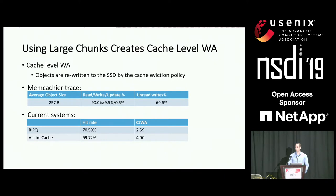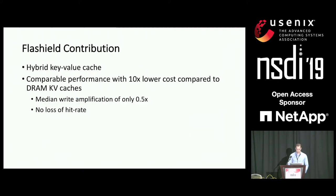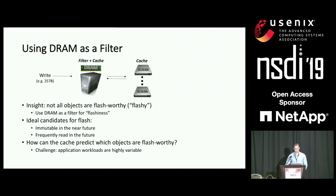That led us to design Flash Shield, a cache that uses both DRAM and Flash. Our goal is to have comparable performance to DRAM caches but with more than 10 times lower cost, achieved by minimizing write amplification. One of the key insights is that not all objects in the cache are Flash-worthy — or what we call 'flashy.' So instead of writing all objects to Flash, we always write them first to DRAM and they must prove their flashiness before being written to Flash.